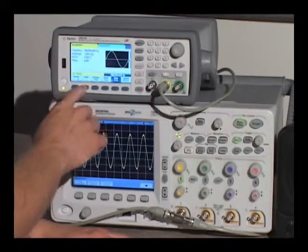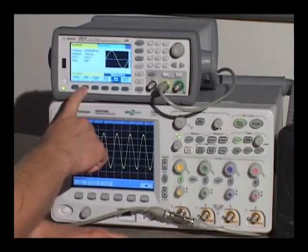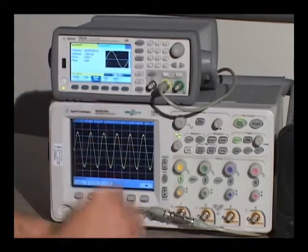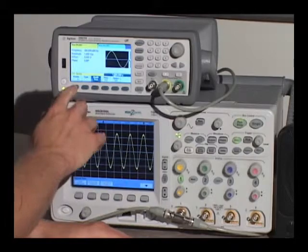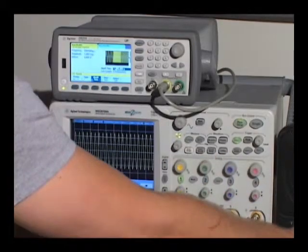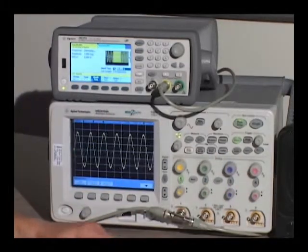There's another new feature, a different type of sweep called list. I've entered in three values already. Let me go ahead and turn it back on. You can see it jumps through the three different frequencies I set.